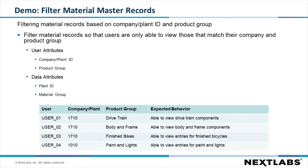In this example, we will see how DAE can be used to filter the material master records. Specifically, we have a joint venture where two companies collaborate to produce bicycles. The material master record view will be filtered so that users can only see the records associated with their company or plant ID and their product group. We will be using the user attributes of company or plant ID and product group, and matching those with the data attributes of the plant ID and the material group, and only showing those that match.